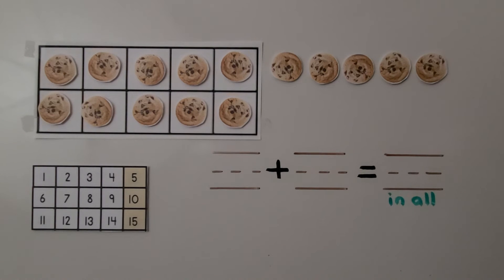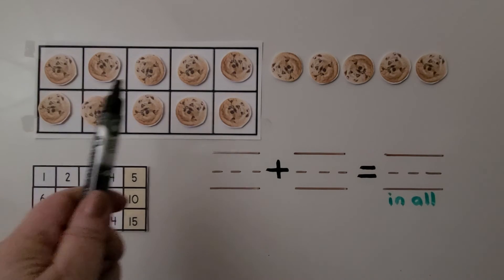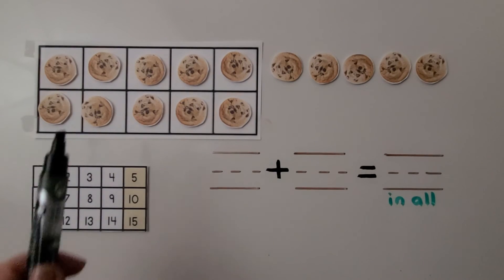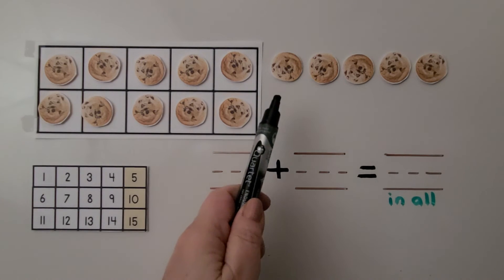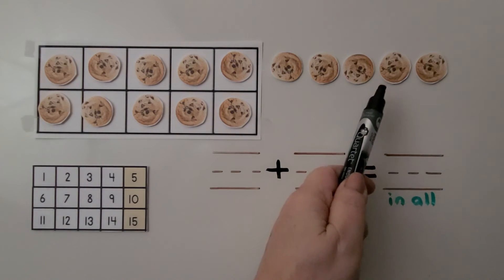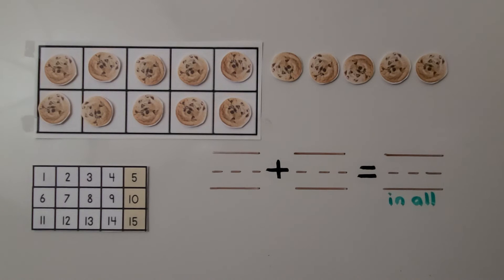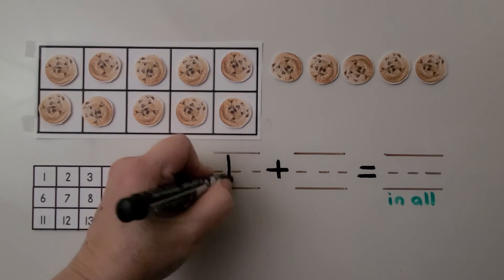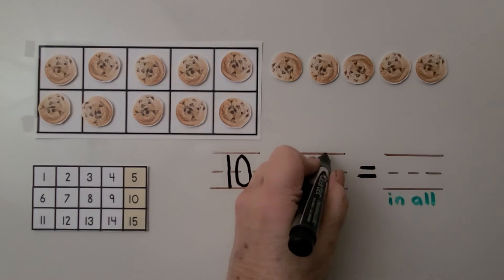Here are some cookies. We can see there are 10 cookies and some more cookies. We have 10 and 1, 2, 3, 4, 5 more. There is 10 plus 5.